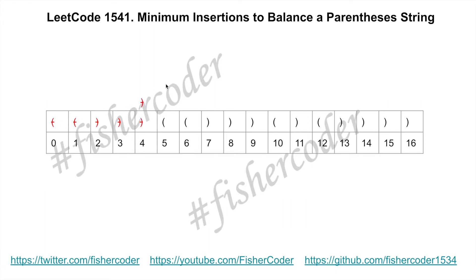Continuing through the string: two left parentheses followed by two right parentheses — those three are balanced. Then there's one right parenthesis with one more left remaining, so we add one more right parenthesis. Moving on, we have another left needing two consecutive rights, so we add one more right parenthesis. Then two right parentheses remain, so we need to add one left parenthesis to balance them out.